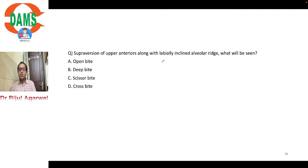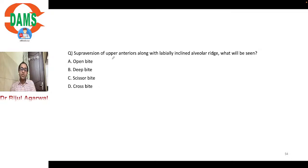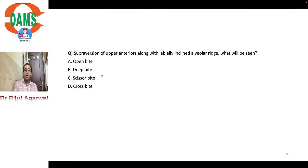Supra-version of upper anteriors along with labially inclined alveolar ridge — what will be seen? Supra-version means extrusion of upper incisors. The correct answer is deep bite. It cannot cause open bite; scissor bite is mostly a posterior term; crossbite involves labiolingual displacement. By rule of elimination and logic, the answer is deep bite.